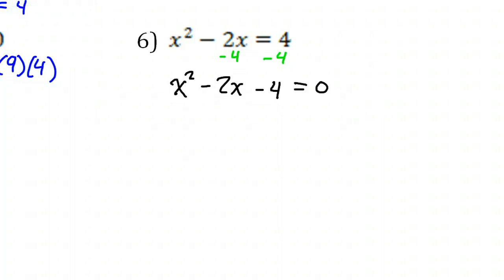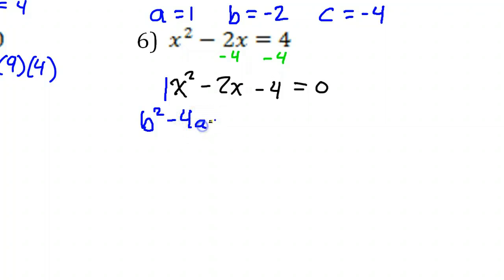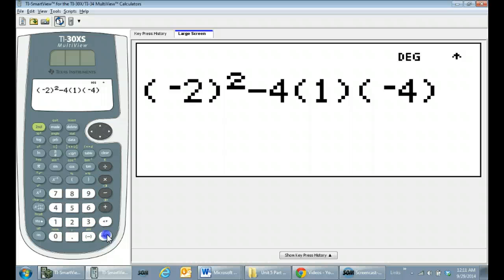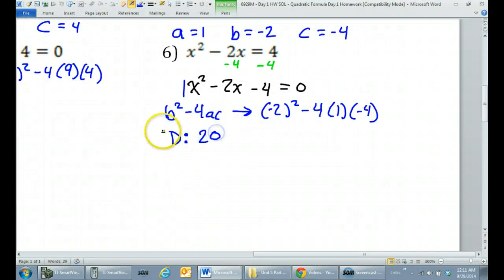Then we can go on with the problem. A is 1, B is negative 2, and C is negative 4 — not positive 4, negative 4. Let's calculate the discriminant: B squared minus 4AC. That's negative 2 squared, in parentheses, minus 4 times 1 times negative 4. The discriminant is 20.